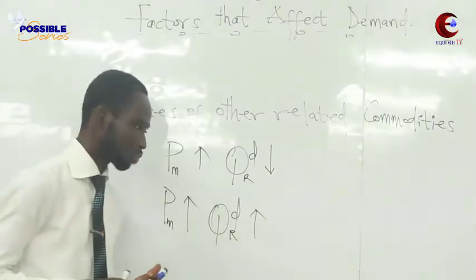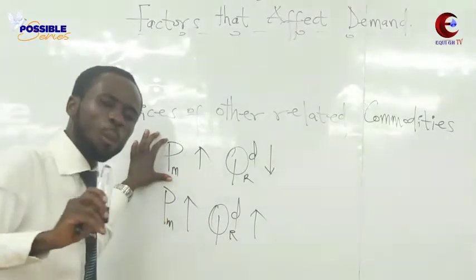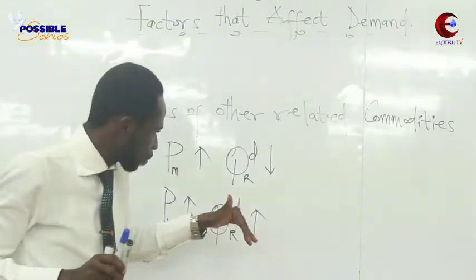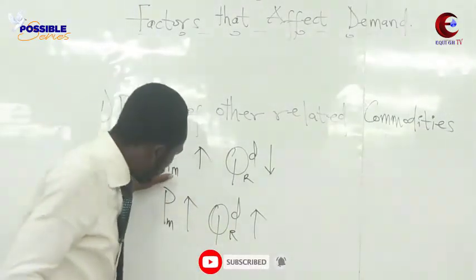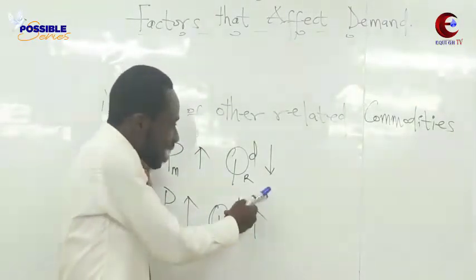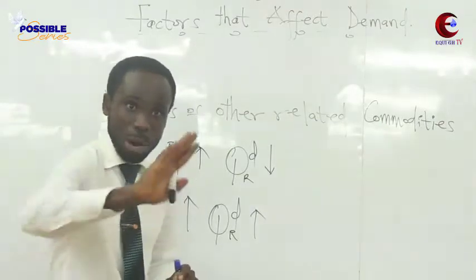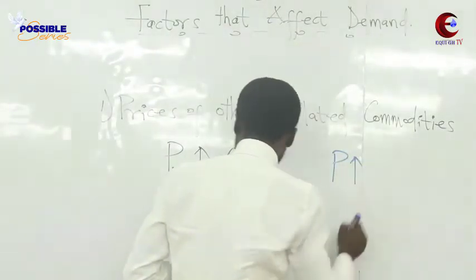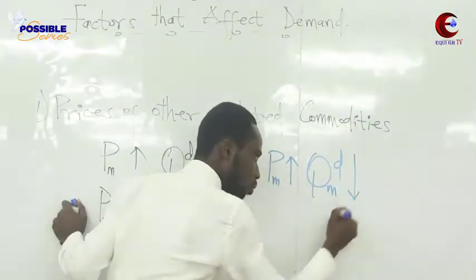Listen carefully. When the price of Milo goes up and the quantity demanded of Richoku goes down, look at the behind the scene. When the price of Milo goes up, quantity demanded of Milo will go down per the law of demand. But the reason we don't write this aspect is that we are talking about prices of other related commodities, not own price. We write the quantity demanded of Richoku.